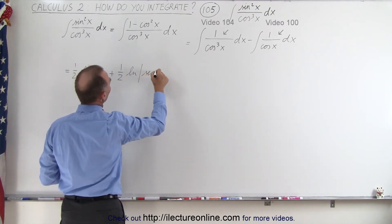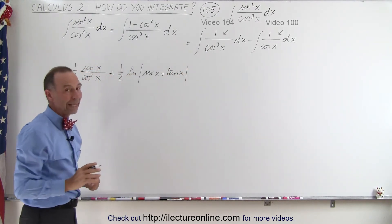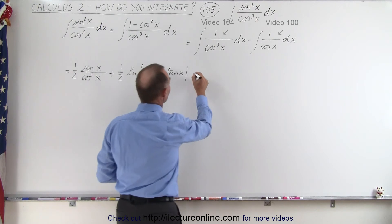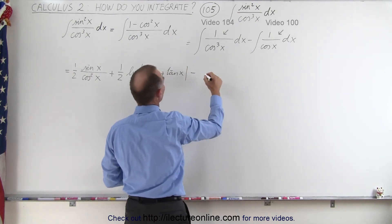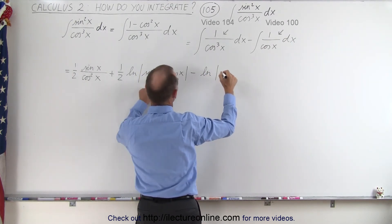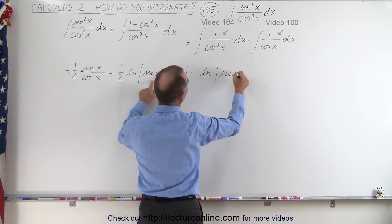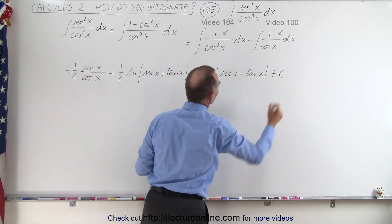And then we subtract from that the integral of 1 over the cosine of x, which is equal to the positive natural log of the secant of x plus the tangent of x. And now we add the constant of integration.